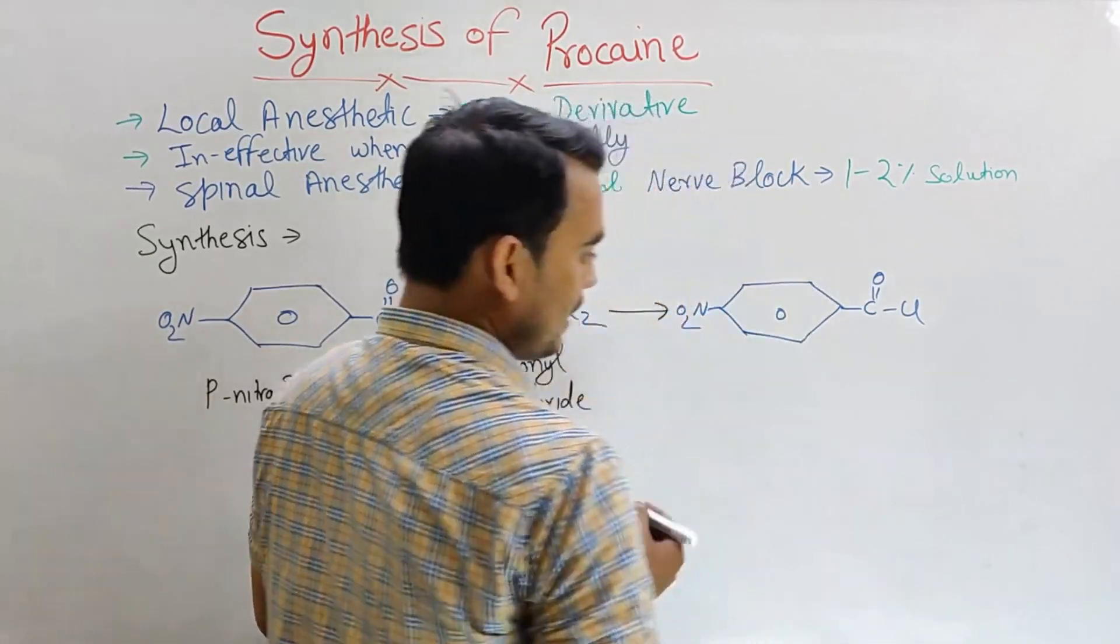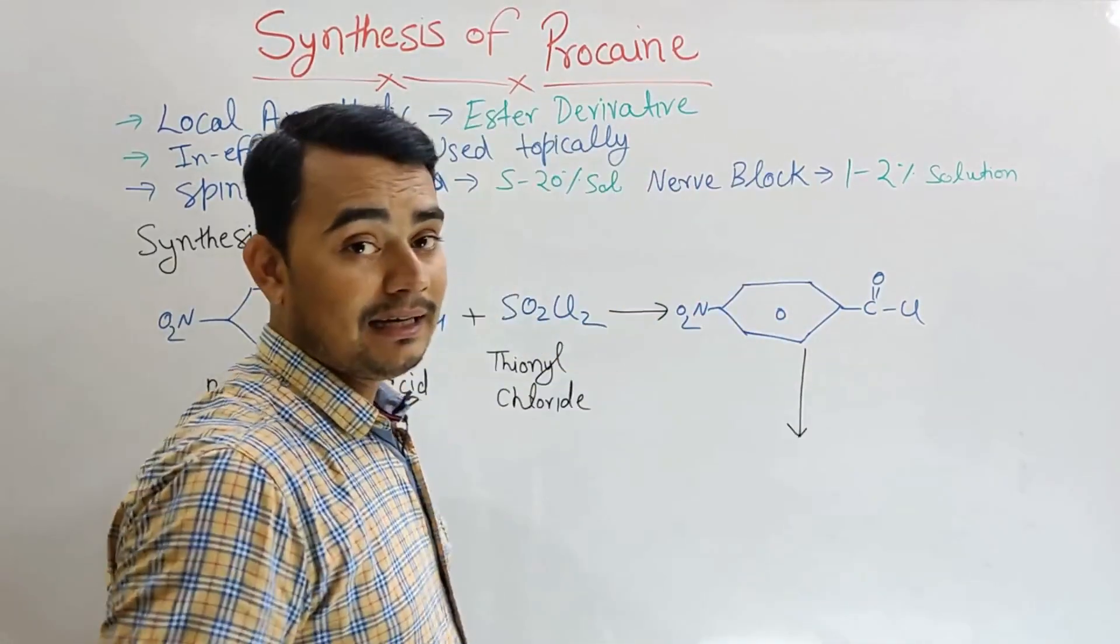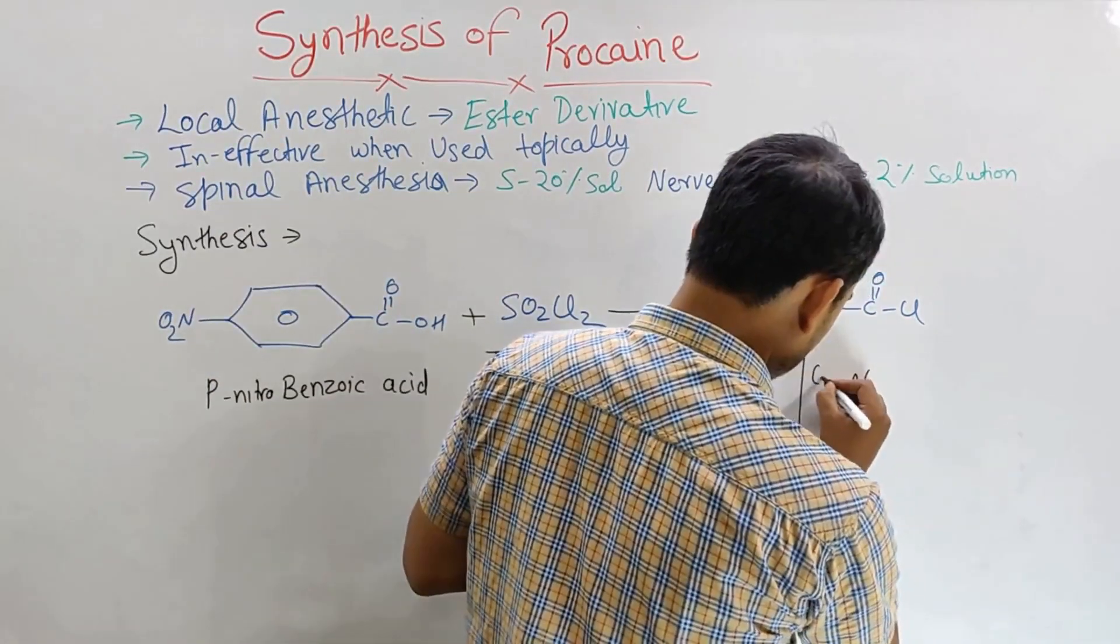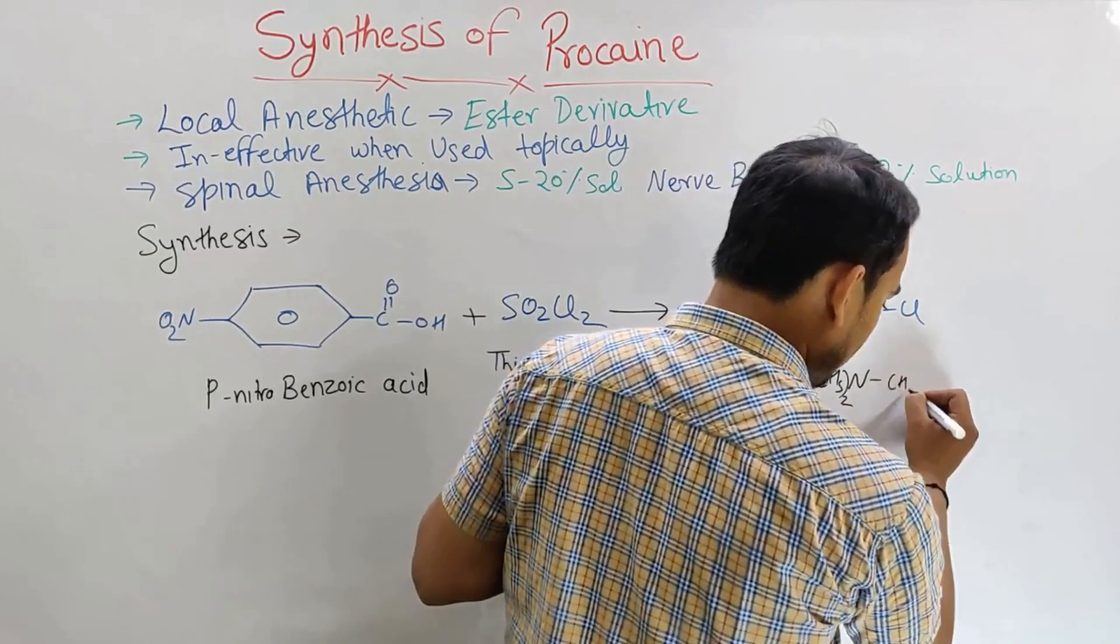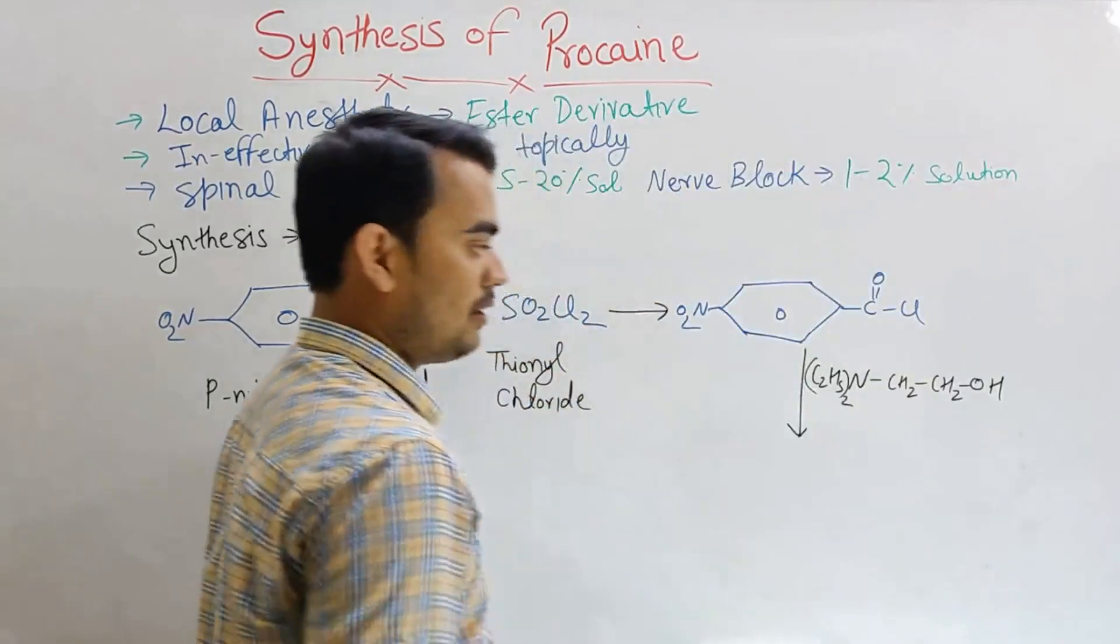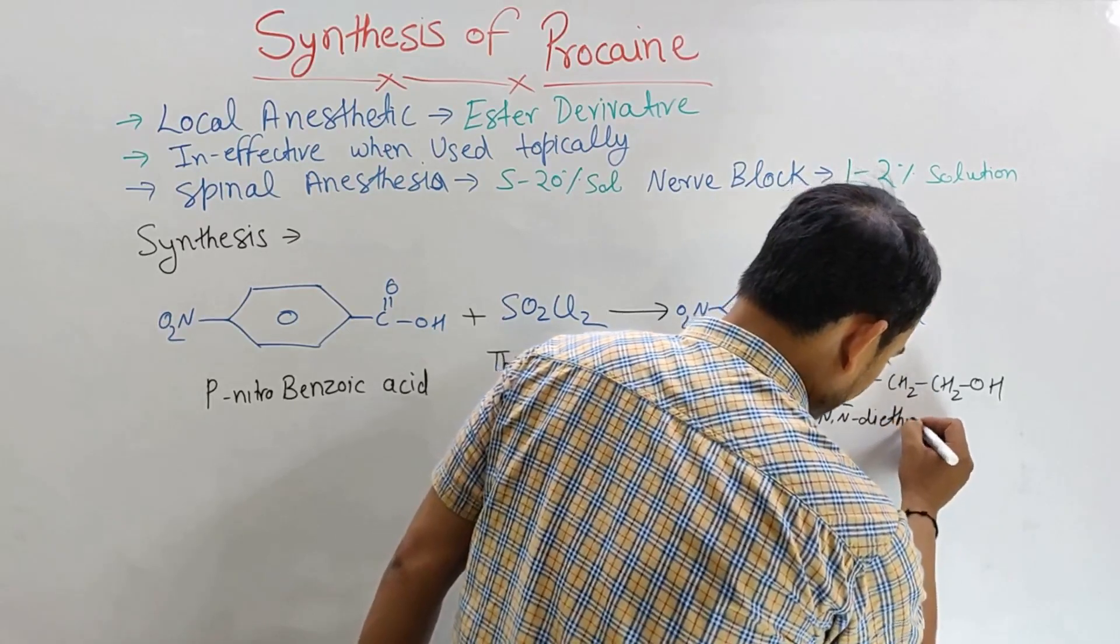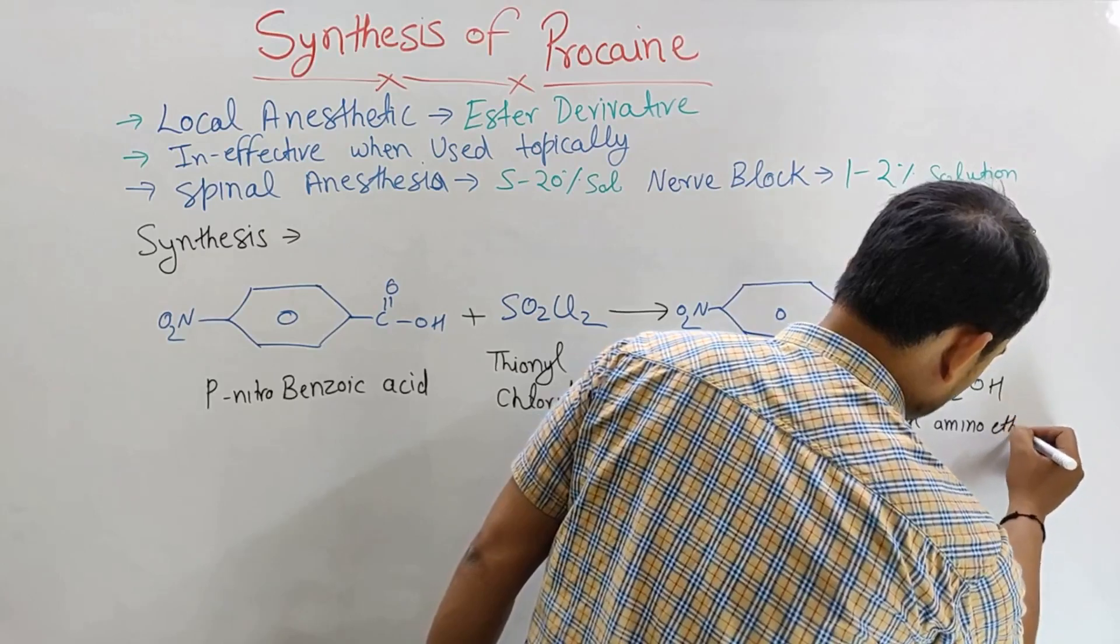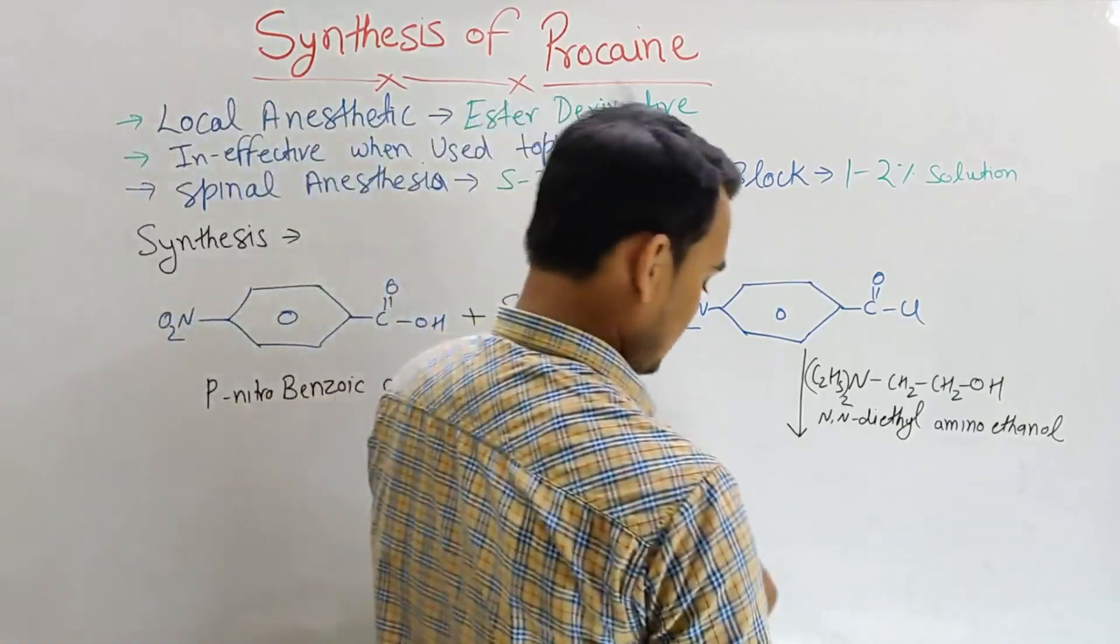Now this chloroacid when reacted with N,N-diethyl aminoethanol, C2H5 twice N-CH2-CH2-OH. When reacted with N,N-diethyl aminoethanol, what happens?